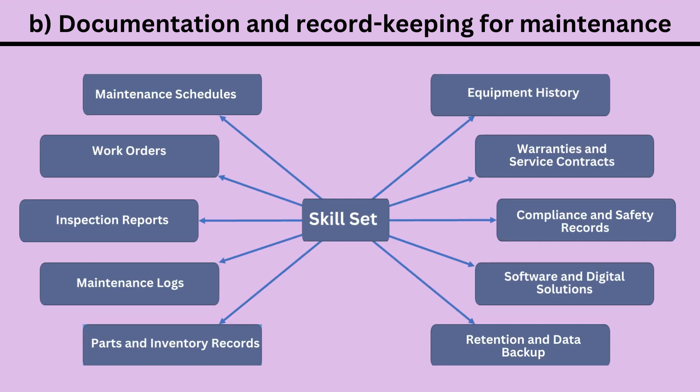The key elements include: 1. Maintenance schedules. 2. Work orders. 3. Inspection reports. 4. Maintenance logs. 5. Parts and inventory records. 6. Equipment history. 7. Warranties and service contracts. 8. Compliance and safety records. 9. Software and digital solutions. 10. Retention and data backup.